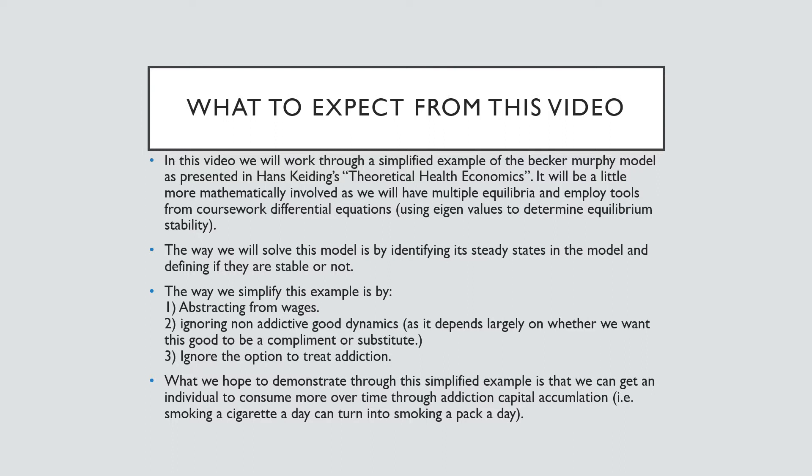In this video, we're going to work through a simplified example of the Becker-Murphy model as presented in Hans Keating's Theoretical Health Economics. It will be a little bit more mathematically involved as we will have multiple equilibria and employ tools from coursework on differential equations, specifically using eigenvalues to determine equilibrium stability. The way we will solve this model is by identifying its steady states and defining if they are stable or not.